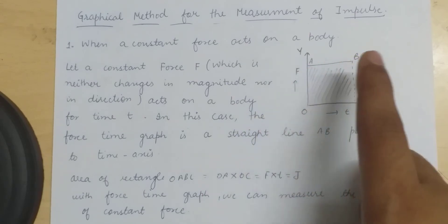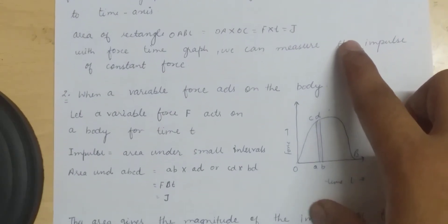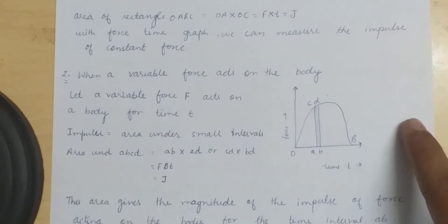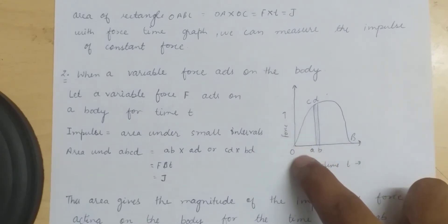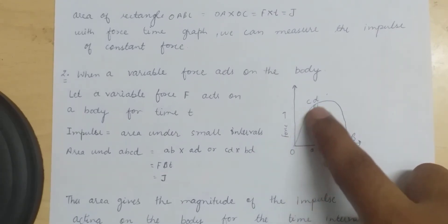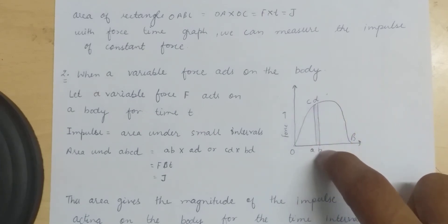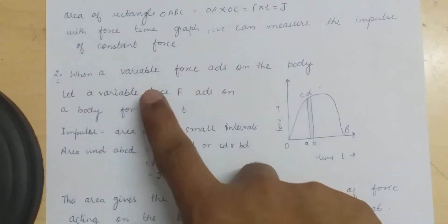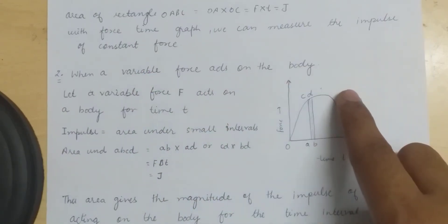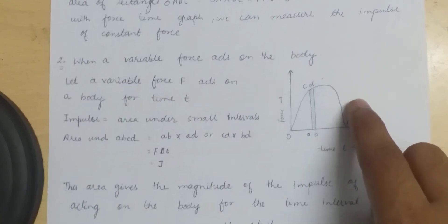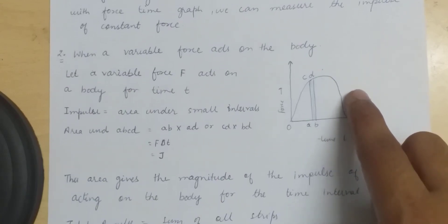Second case: when a variable force acts on a body. The graph now shows a variable force on the y-axis and time on the x-axis. We consider a small strip under the curve. Let a variable force F act on a body for time t.